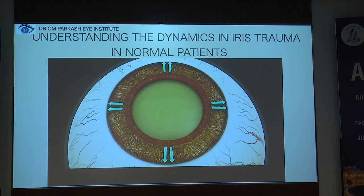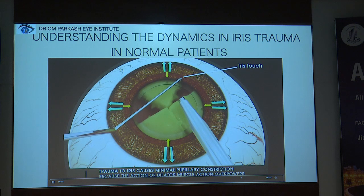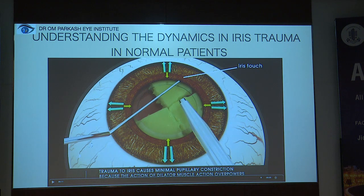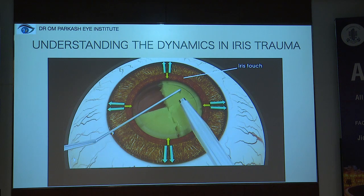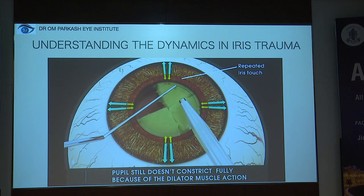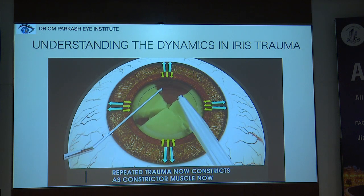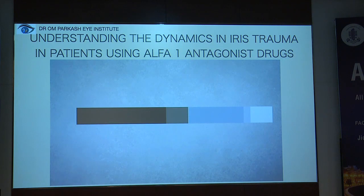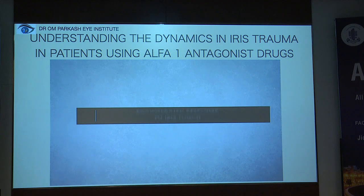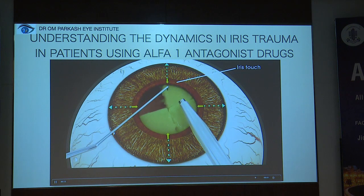In normal patients, there is strong dilator tone so the pupil achieves maximum dilation. When there is iris touch, trauma causes minimum pupillary constriction because the dilator muscle is stronger. With repeated touch it constricts slightly, and with further repeated touch the constrictor muscle overpowers, causing pupillary constriction. In contrast, when the patient uses an alpha-1 antagonist drug, there is an exaggerated response to iris touch — weak dilator tone means even a small touch causes pupillary constriction.